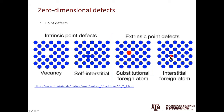There are a couple of things to say about the zero-dimensional defects. For the intrinsic point defects, especially vacancies, there's no way for you to completely get rid of them. Regardless of how well you prepare your specimen, you will always have some point defects in your material. For the extrinsic point defects — let's call them solid solution atoms — they can strongly interact with dislocations, which we'll discuss in detail in a later video.